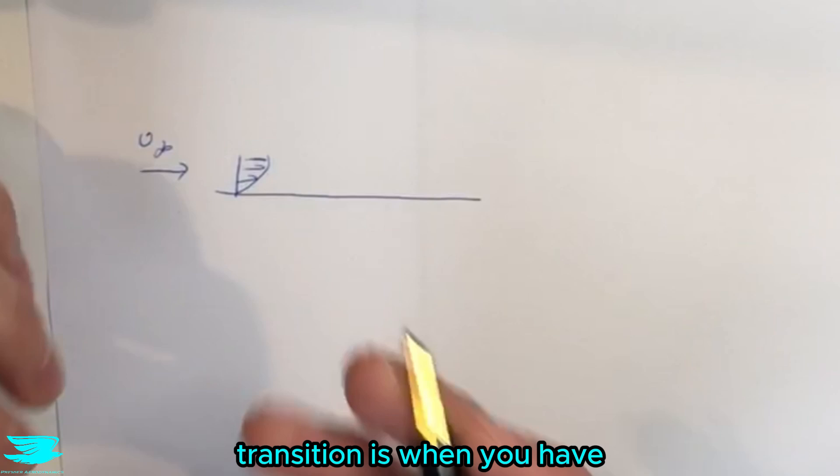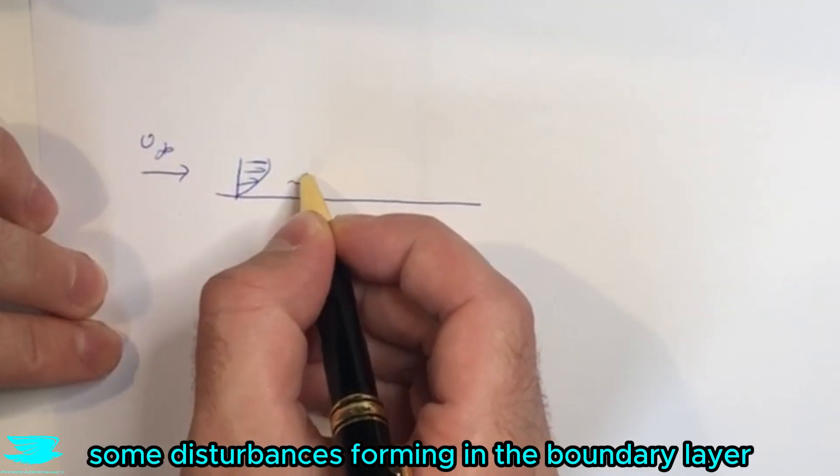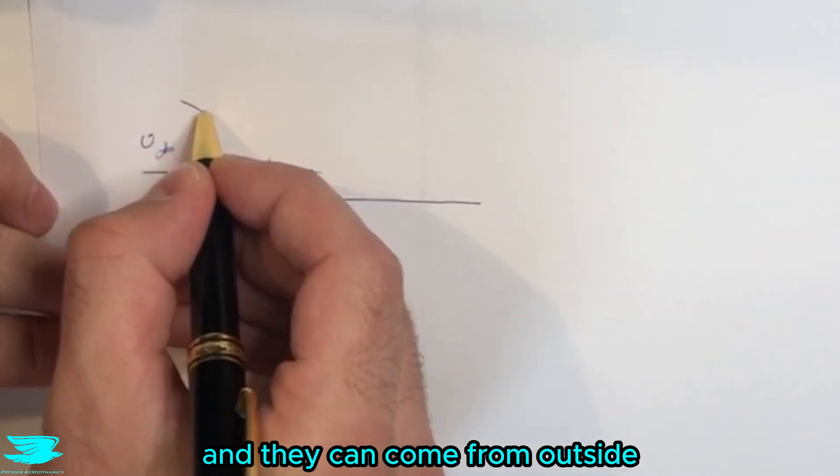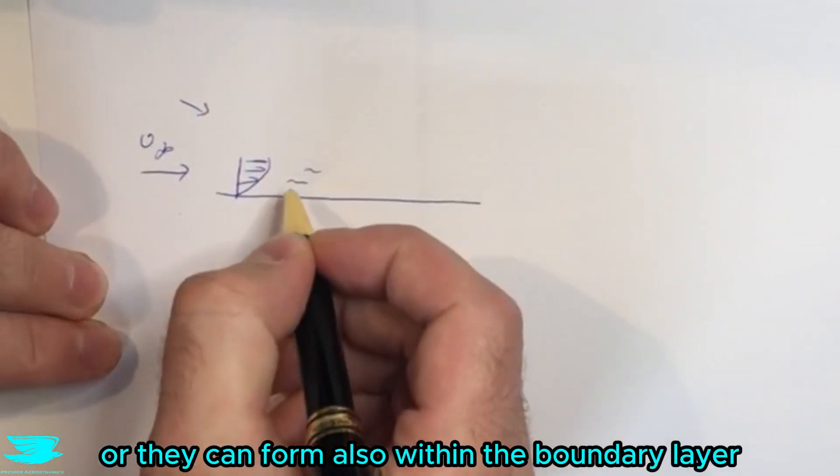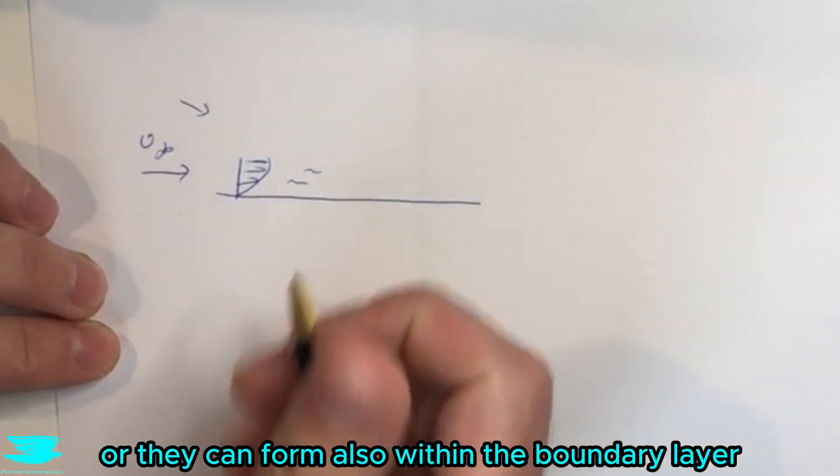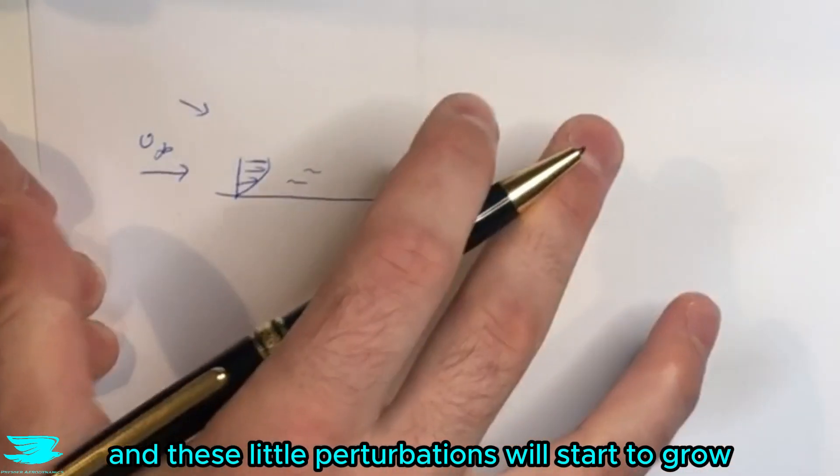So natural transition is when you have some disturbances forming in the boundary layer. They can come from outside and permeate straight in, or they can form also within the boundary layer, and these little perturbations will start to grow more and more.